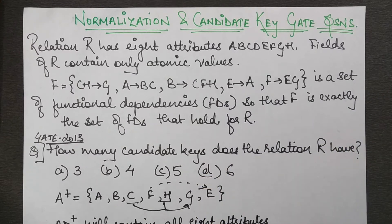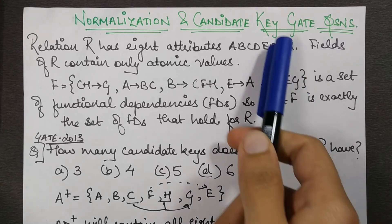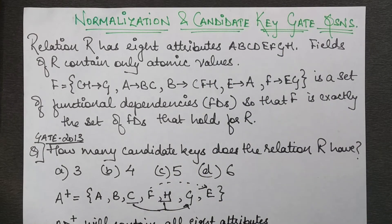This is a linked question. The first question asks: how many candidate keys does relation R have? To find candidate keys, we compute the closures of attributes and check which closures contain all the attributes in the relational schema. The one that contains all attributes is a candidate key. Since there can be multiple candidate keys, we find all possible ones.